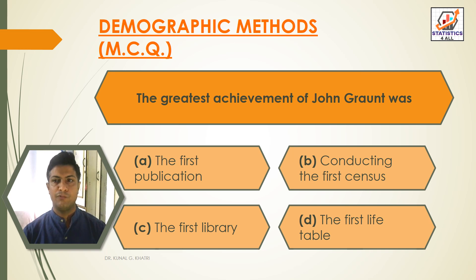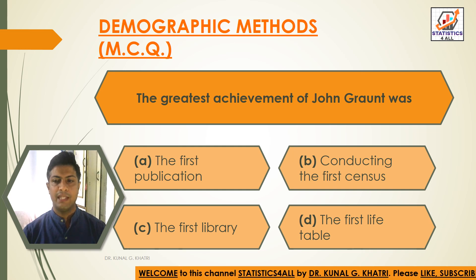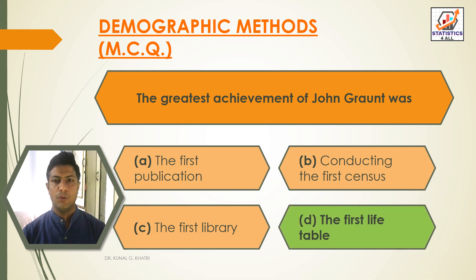Next question: the greatest achievement of John Graunt was — Option A: the first publication, Option B: conducting the first census, Option C: the first library, Option D: the first life table. The answer is Option D — the first life table is the greatest achievement of John Graunt.